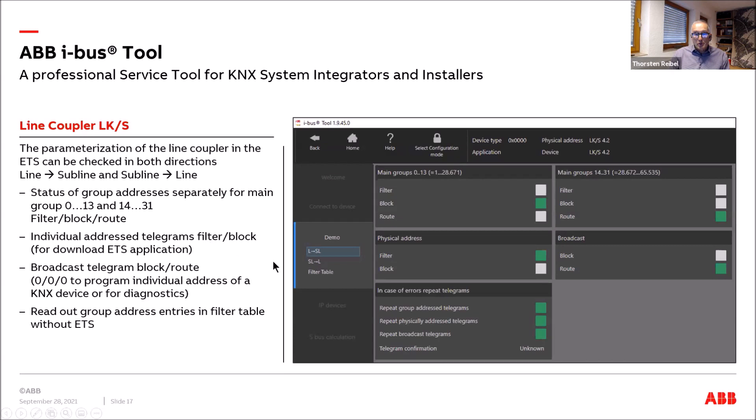For the line coupler, there is nothing to operate — it is purely diagnostic. You can see the status of group addresses and whether they are programmed as filtered, blocked, or routed. The same applies for individual address telegrams needed for ETS application download and broadcast telegrams used for programming the individual address. You can also view the full filter table programmed in the ETS.